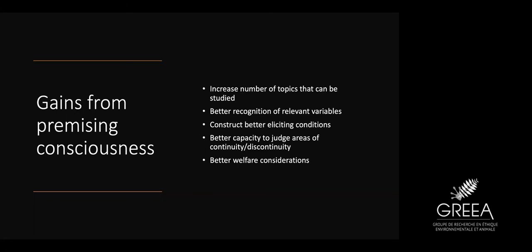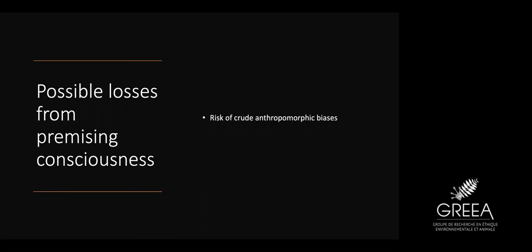The cost we have to confront is quite minimal — there's a risk of crude anthropomorphic bias, thinking that animals are going to be just like us. But we can avoid this by teaching students to avoid thinking that every animal looks at the world the same way we do — the same way we teach anthropologists to avoid cultural biases. If we can do this within the social sciences when it comes to other humans, I think we can do this when it comes to non-human animals as well.